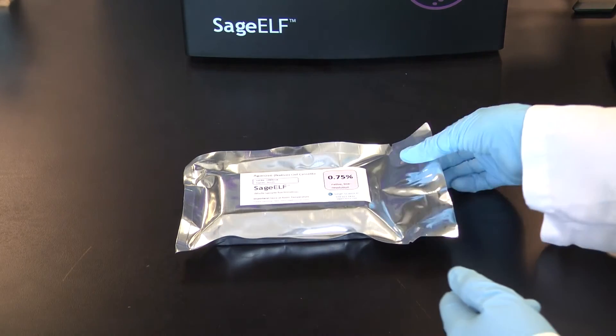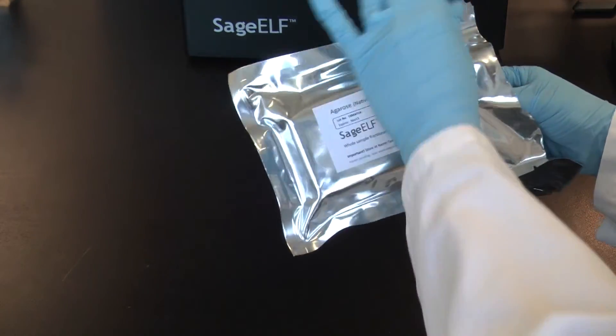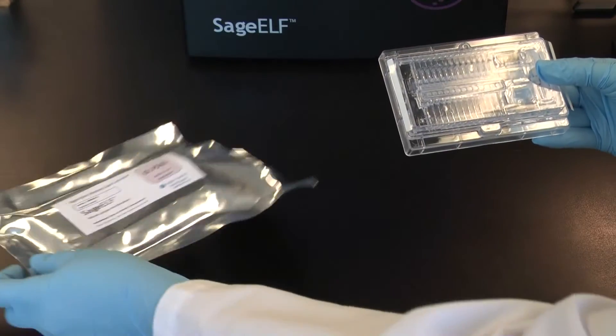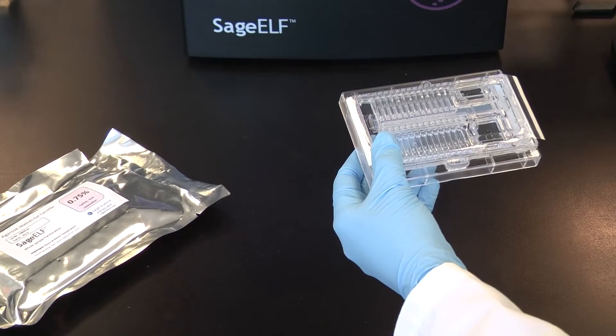To prepare a cassette, remove the cassette from the foil bag. While still taped closed, hold the cassette sideways with the elution well side down.